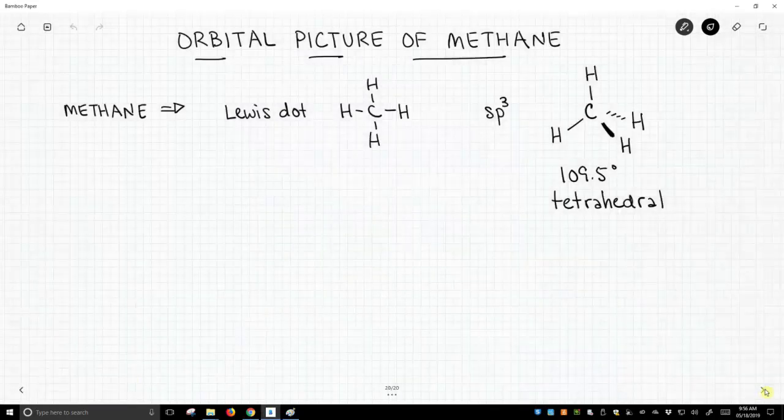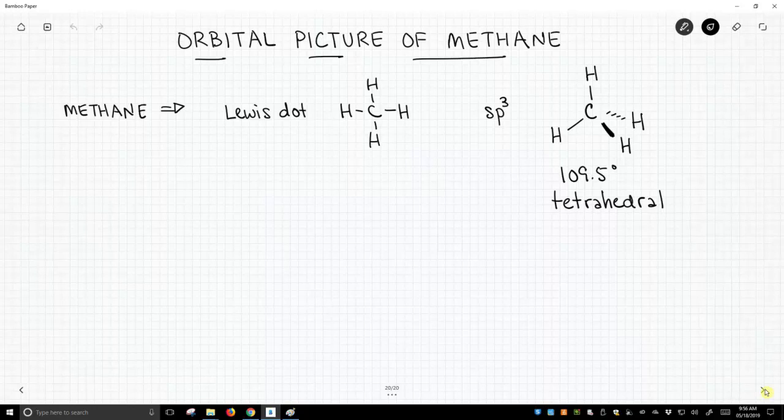Now, methane, we have two different representations on the screen. We have the Lewis dot structure, and then another representation that we've seen before. We're actually now trying to show that this carbon is sp3 hybridized. It has 109-degree bond angles, and it's tetrahedral.